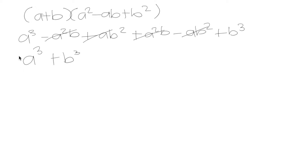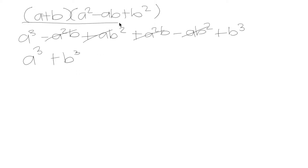What we're left with is a cubed plus b cubed, and this is what we call a sum of cubes. a cubed is a perfect cube because a times a times a is a cubed, and b cubed is also a perfect cube because b times b times b is b cubed. When we notice an expression that is a sum of cubes, we know we can factor it using this expression, which is the factored form of a sum of cubes.